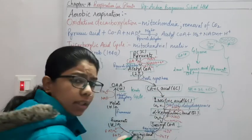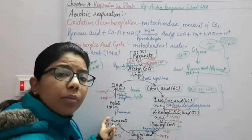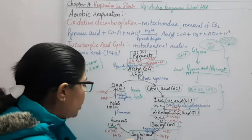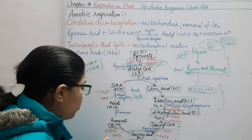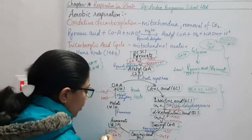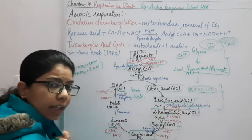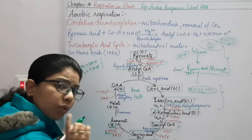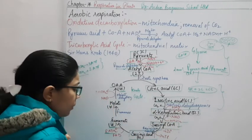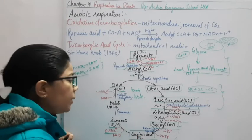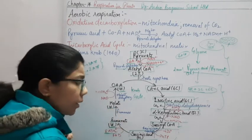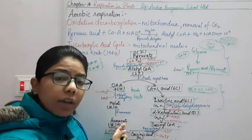The succinic acid is a 4-carbon compound that transforms into fumaric acid (fumarate), also a 4-carbon compound. Here, FAD is converted to FADH₂ by the succinate dehydrogenase enzyme — you can remember: F for fumarate, F for FAD/FADH₂. One FADH₂ gives 2 ATP. Fumarate is then converted to malic acid (malate), a 4-carbon compound, by the fumarase enzyme.